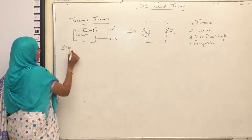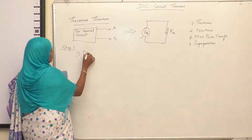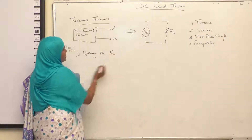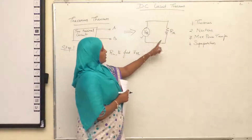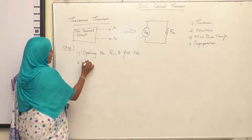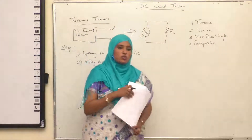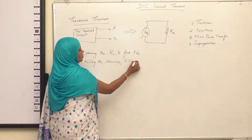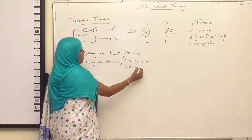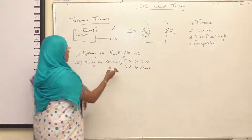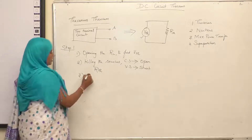We have two steps to solve Thevenin's theorem. Step 1: you need to find the value of VTH. VTH can be found out by opening the load resistance RL. After you find VTH, Step 2 is to find RTH. This can be found out by killing the sources. If it is a current source, you make it open so that no current flows. If it is a voltage source, you make it short so that no voltage is available. Then find RTH from the remaining resistances.